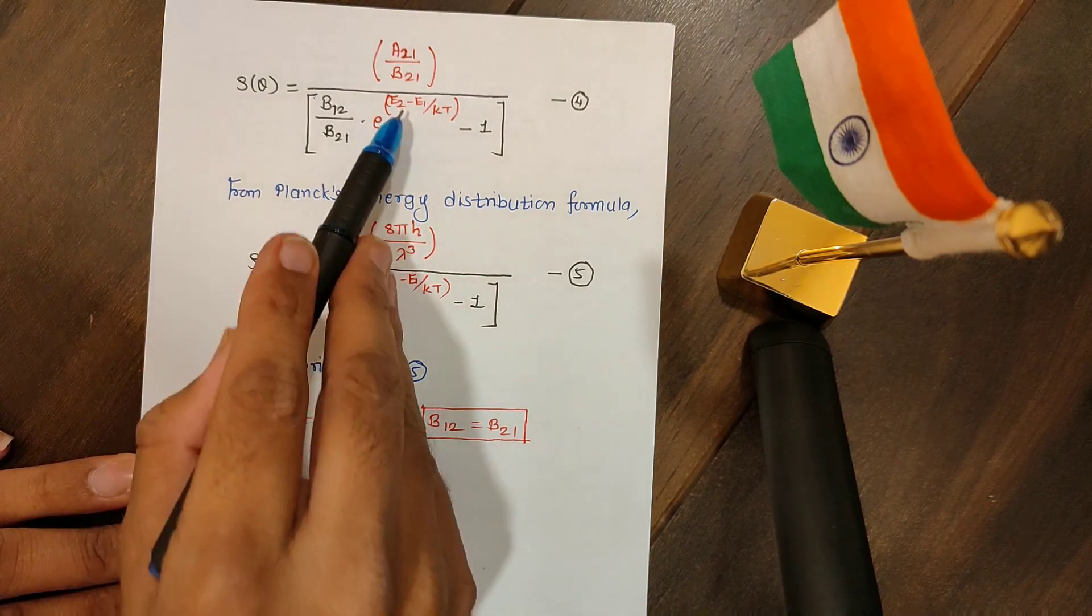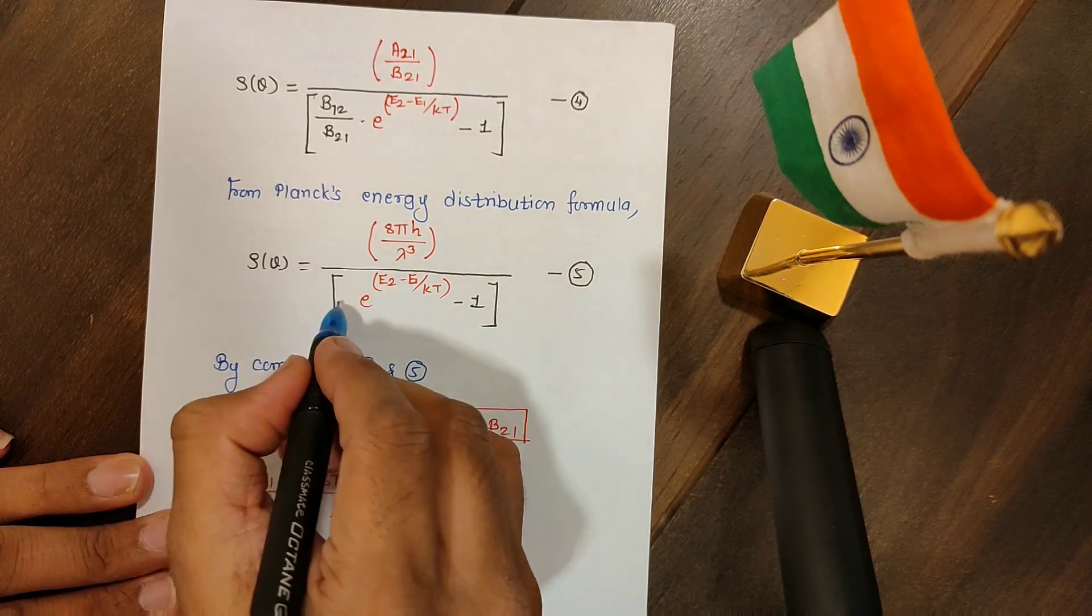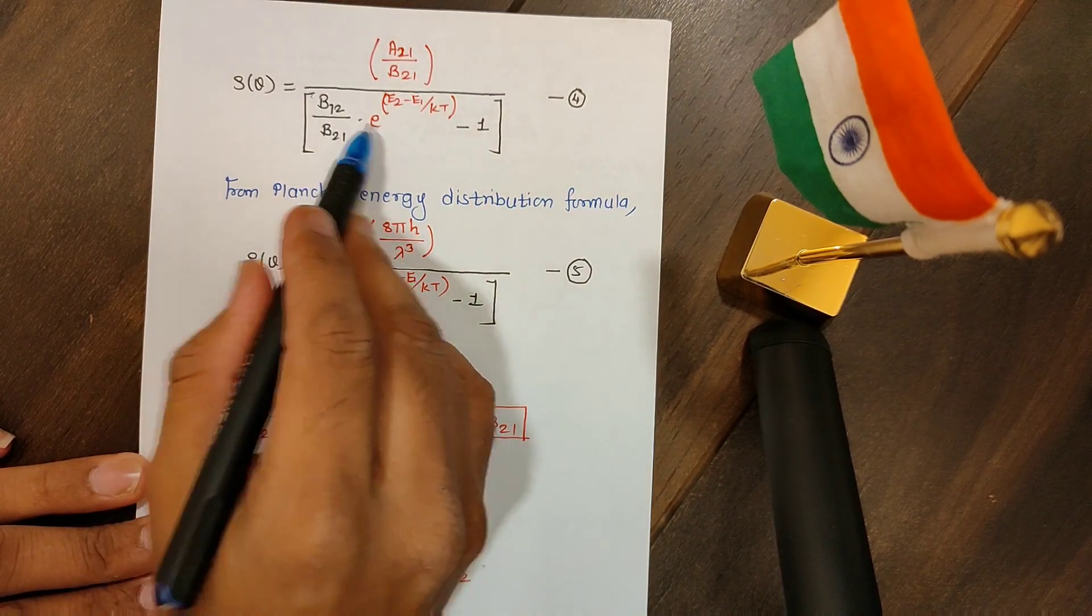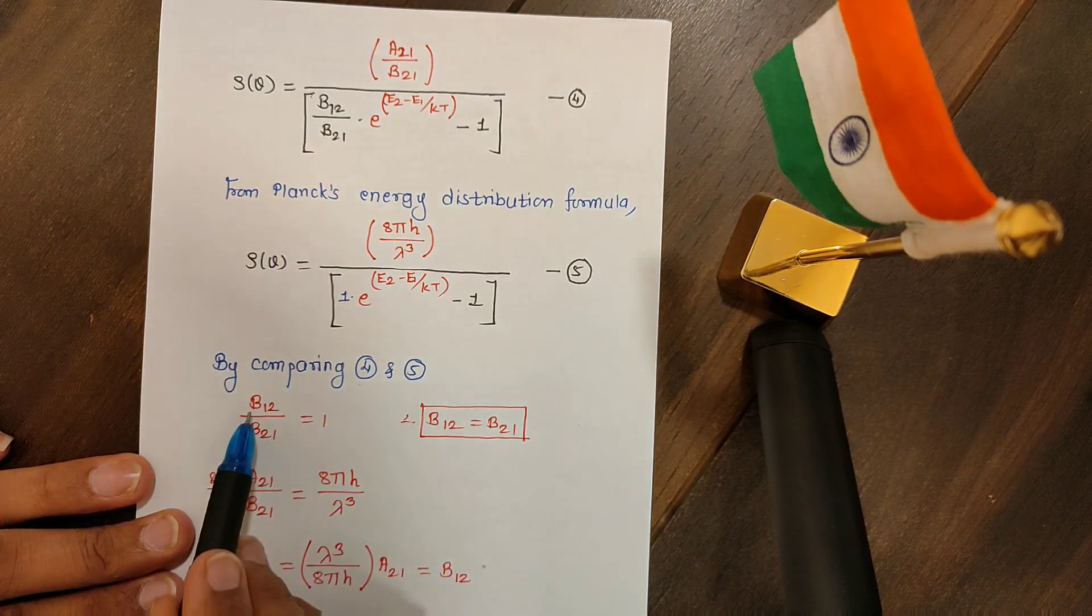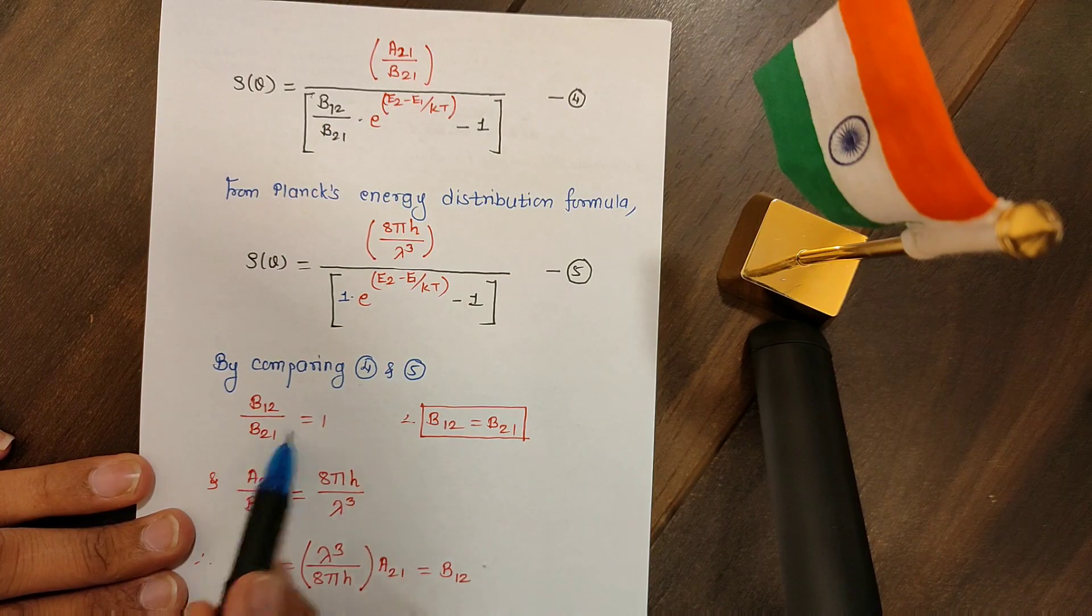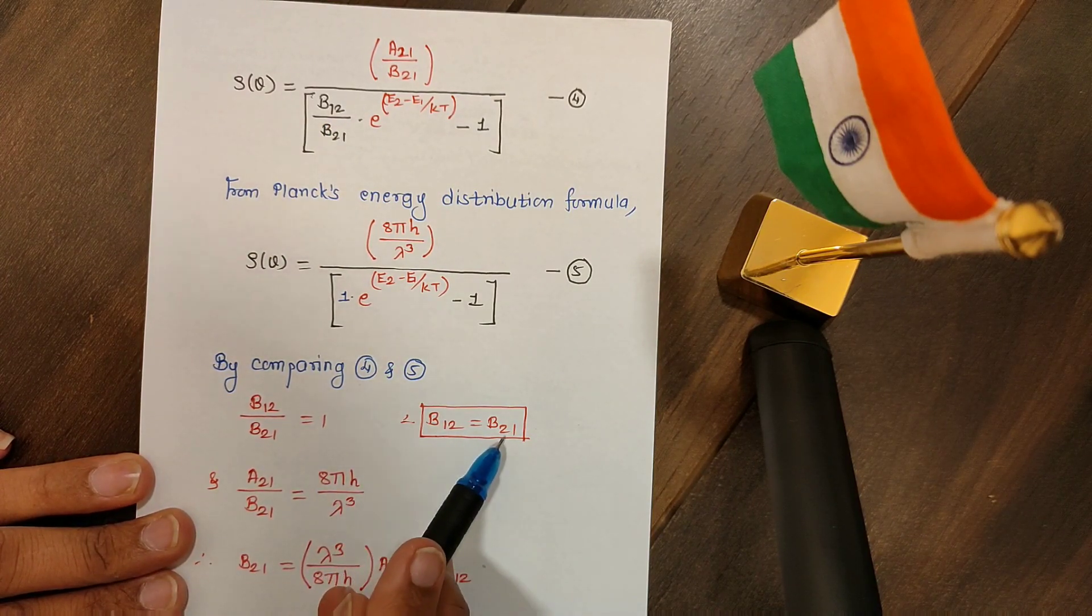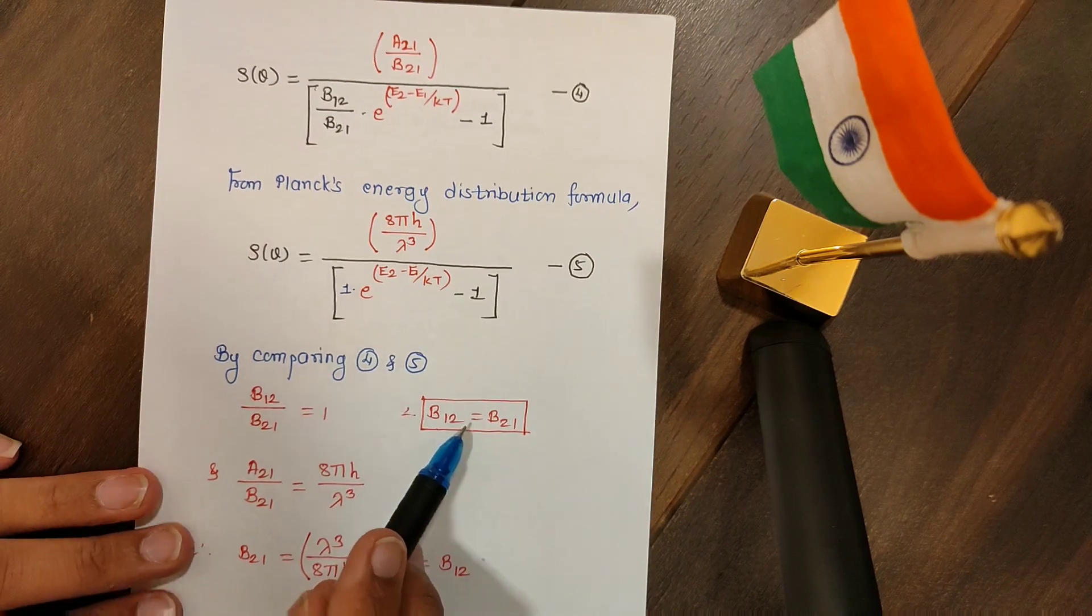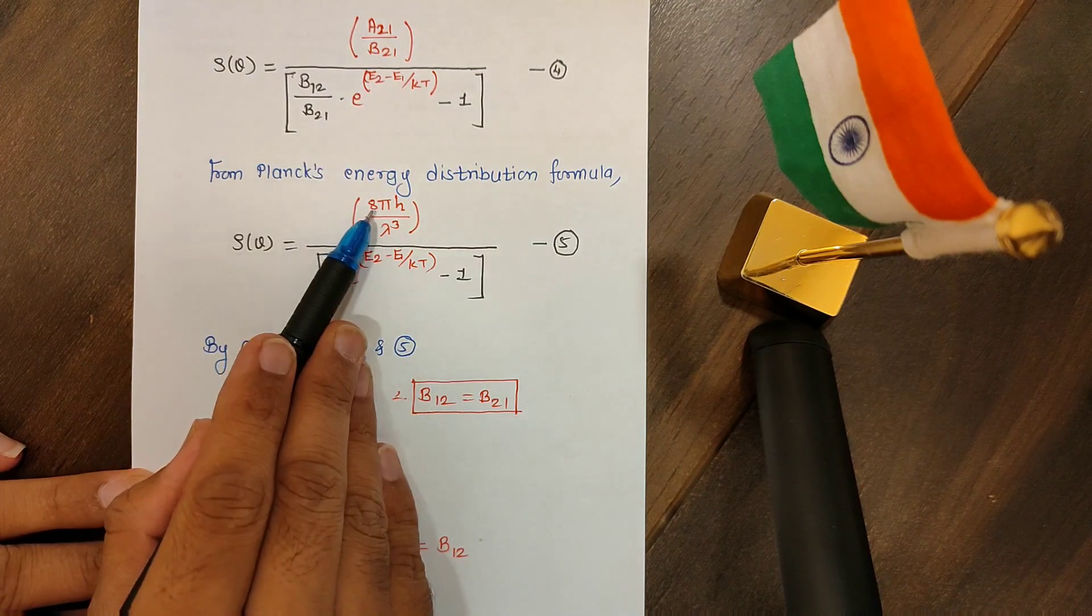Now simply compare these two equations. You will see that here the coefficient of e is 1, and here the coefficient of e is b12 over b21. Therefore I can write b12 over b21 equals 1, therefore b12 equals b21.